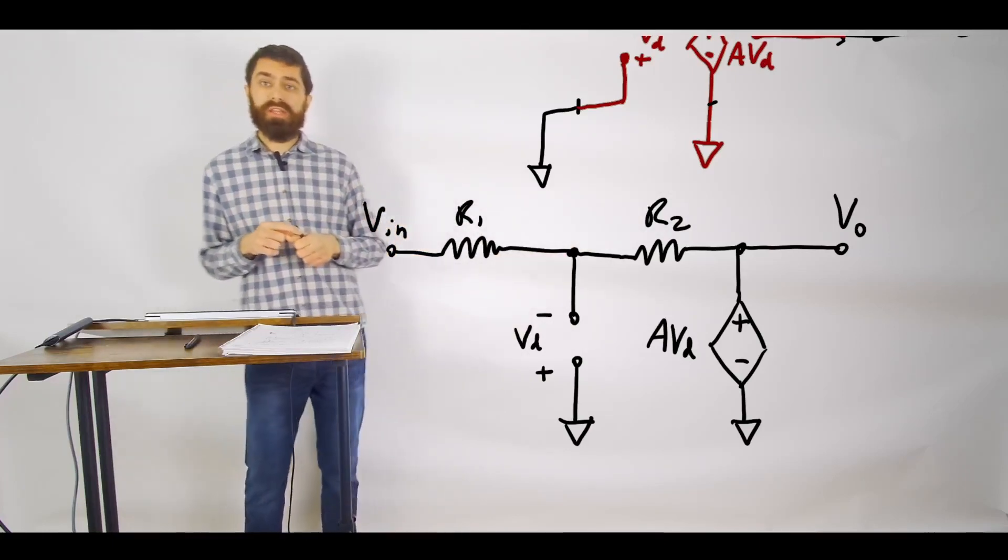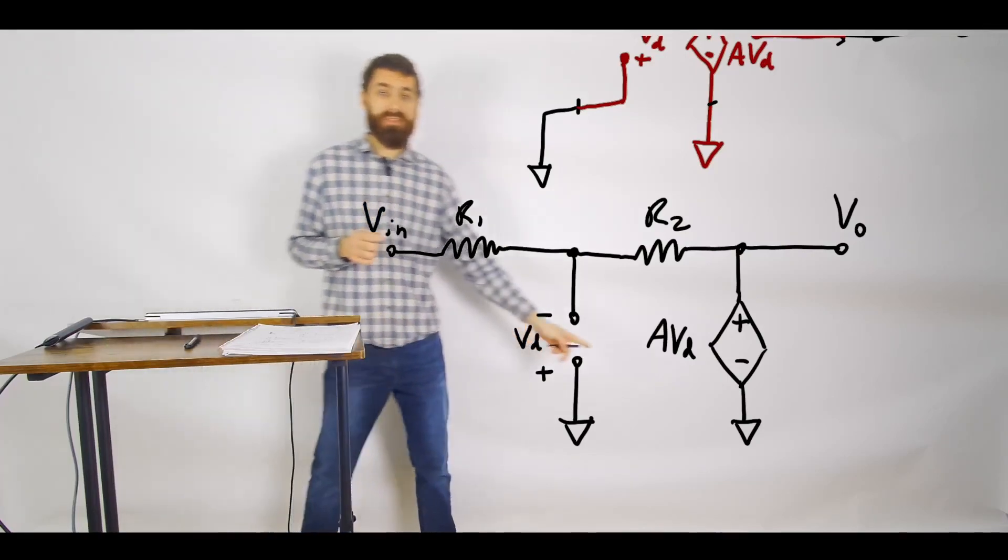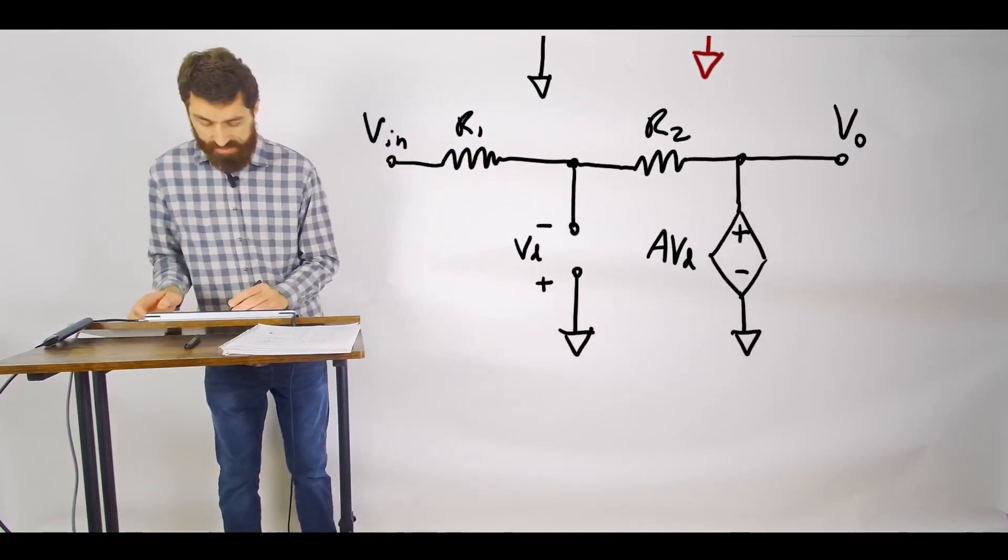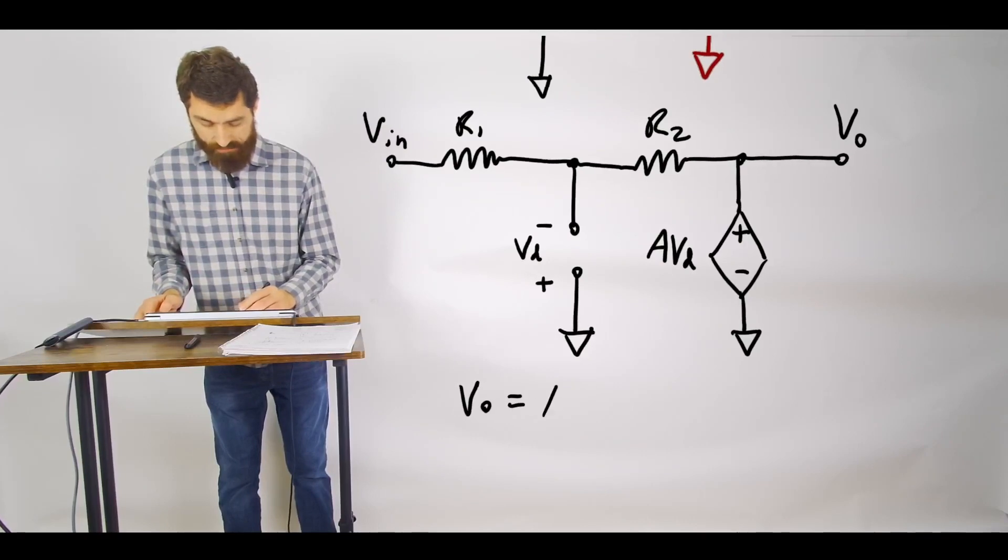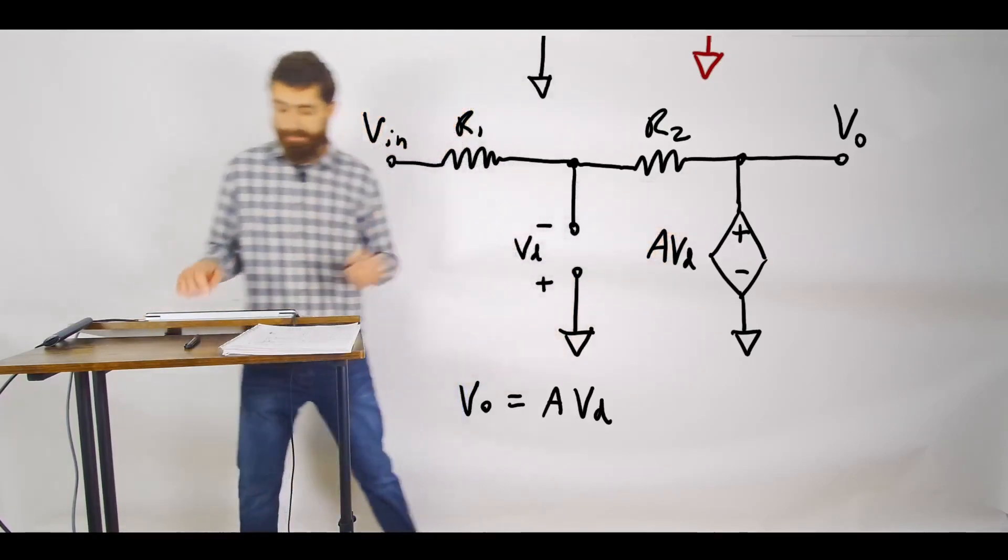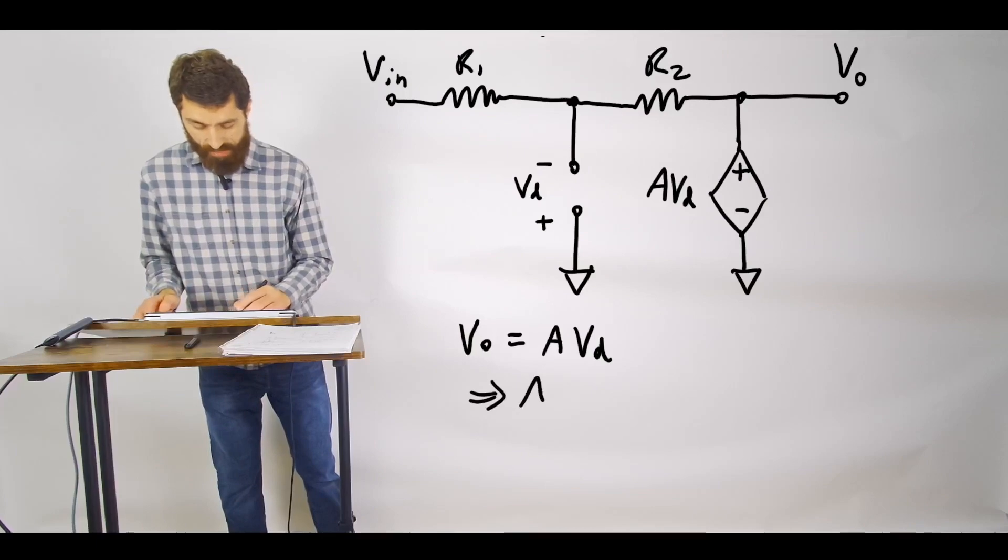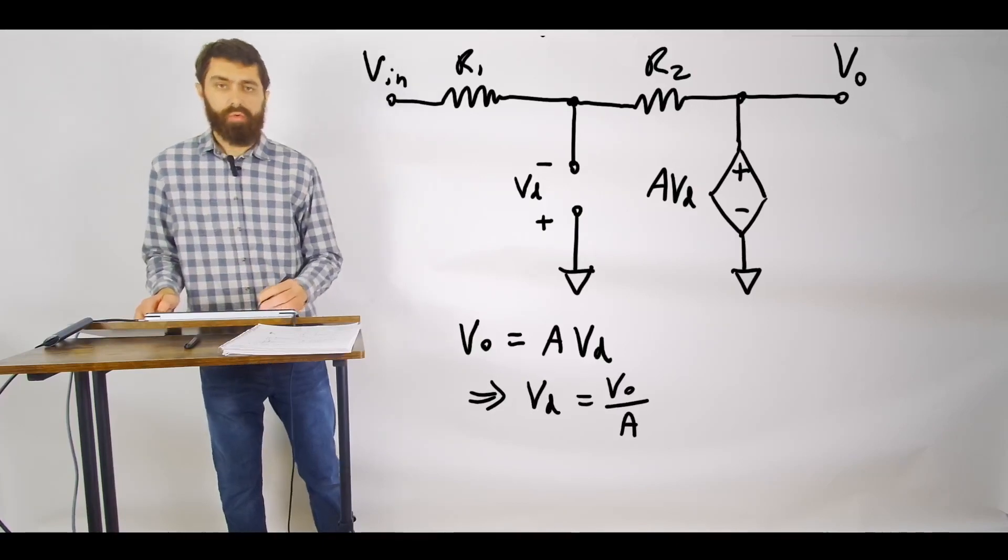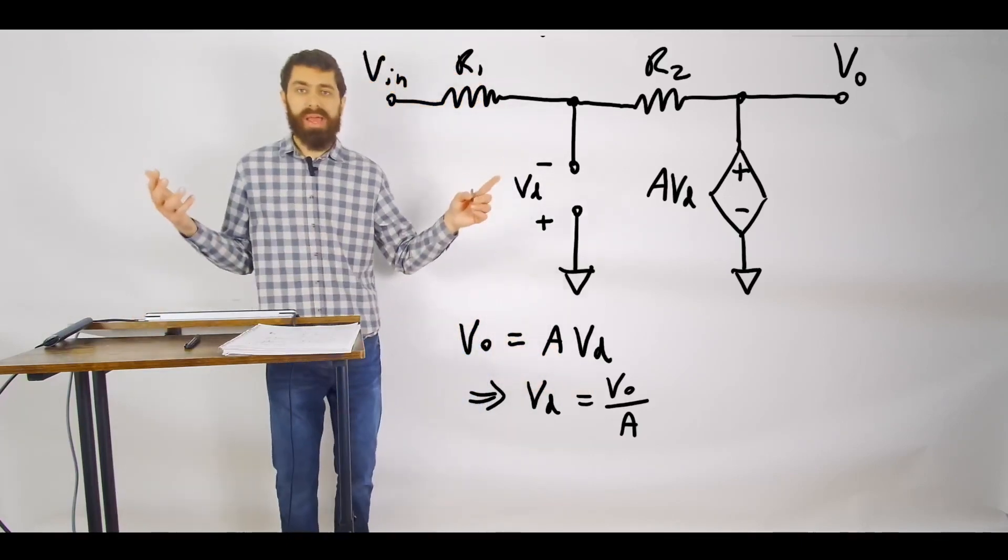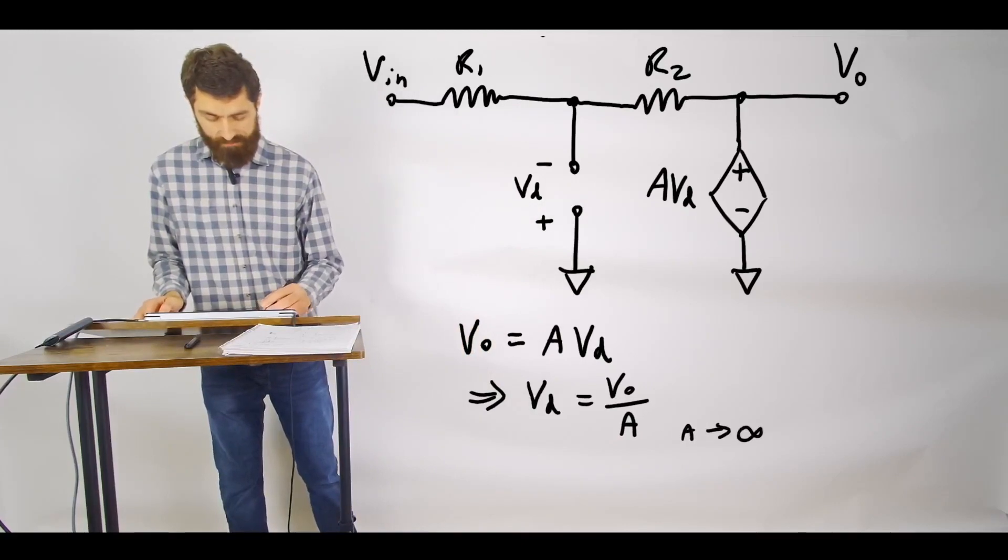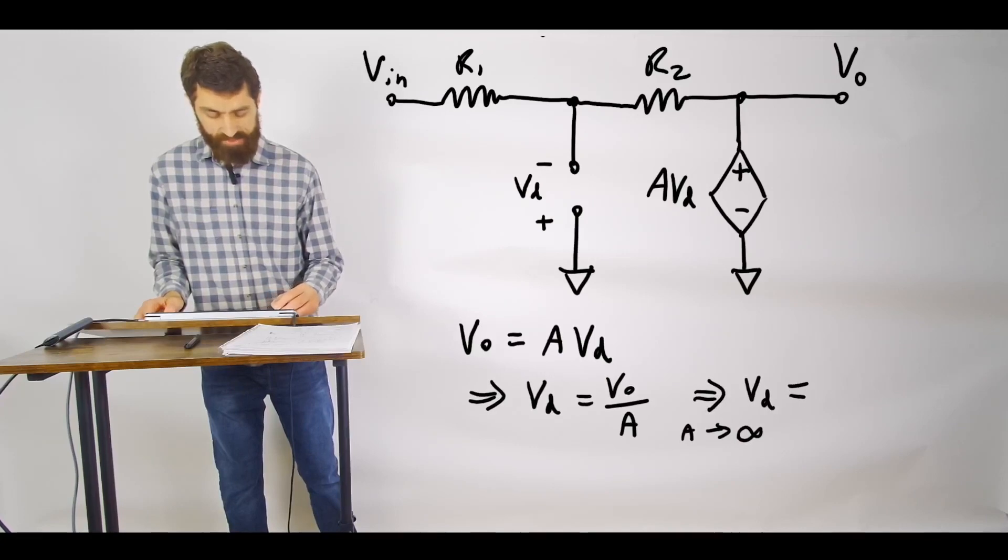The only thing that you want to keep in mind when working with an ideal op-amp is to remember that this A value is assumed to be infinite. So in other words, V0 is equal to AVD, right? This is our voltage source there. So V0 is just equal to AVD. And if you solve for VD, what does this say? If A is really, really massive, VD will go to zero. So if A goes to infinity, then VD, we can say, is equal to zero volts.